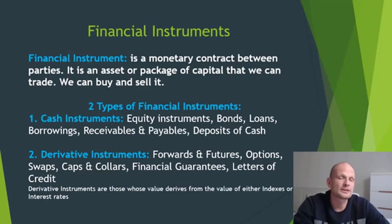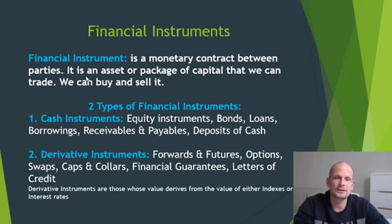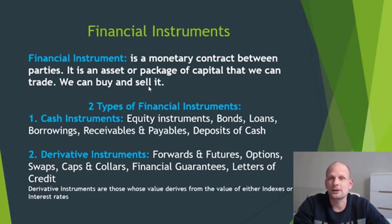So first we need to understand what financial instruments are. A financial instrument is a monetary contract between parties. It is an asset or package of capital that we can trade — we can buy and sell it. Financial instruments are divided into two bigger groups: two types of financial instruments.